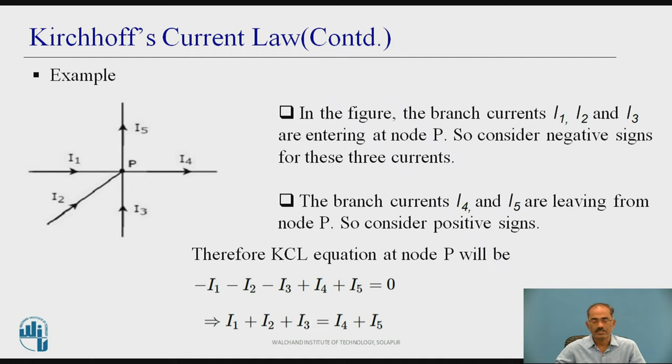Similarly, I4 and I5 are leaving the node we need to consider positive sign. Therefore, plus I4 plus I5 which is equal to 0. If I simplify, this becomes I1 plus I2 plus I3 equal to I4 plus I5.